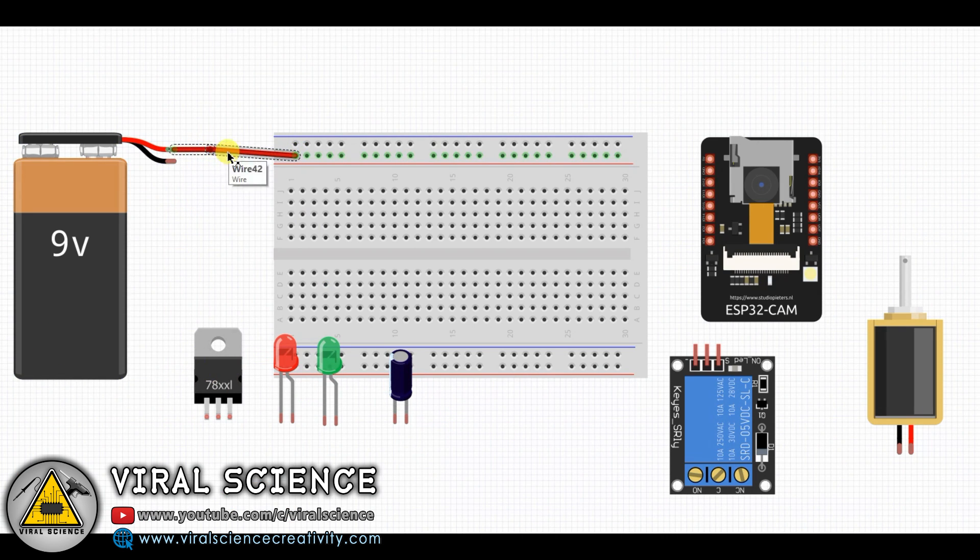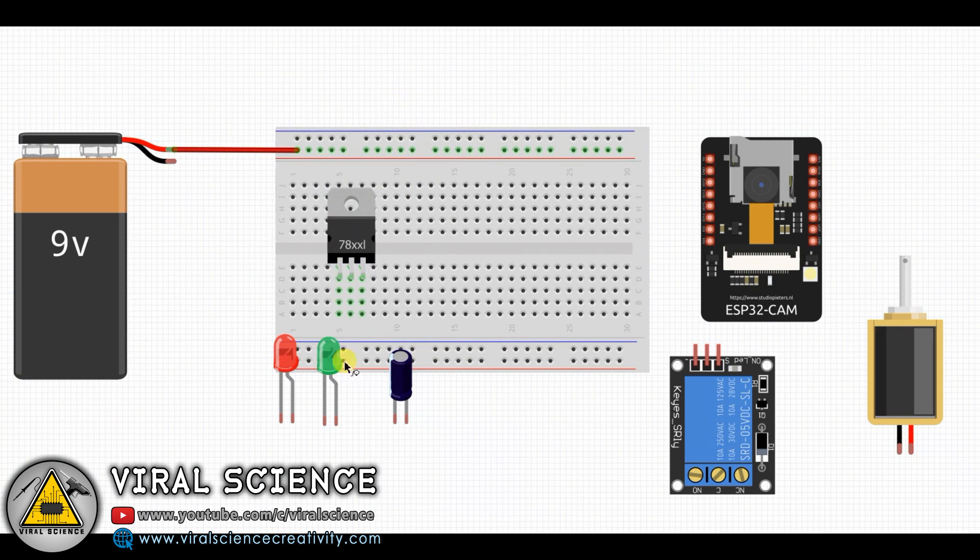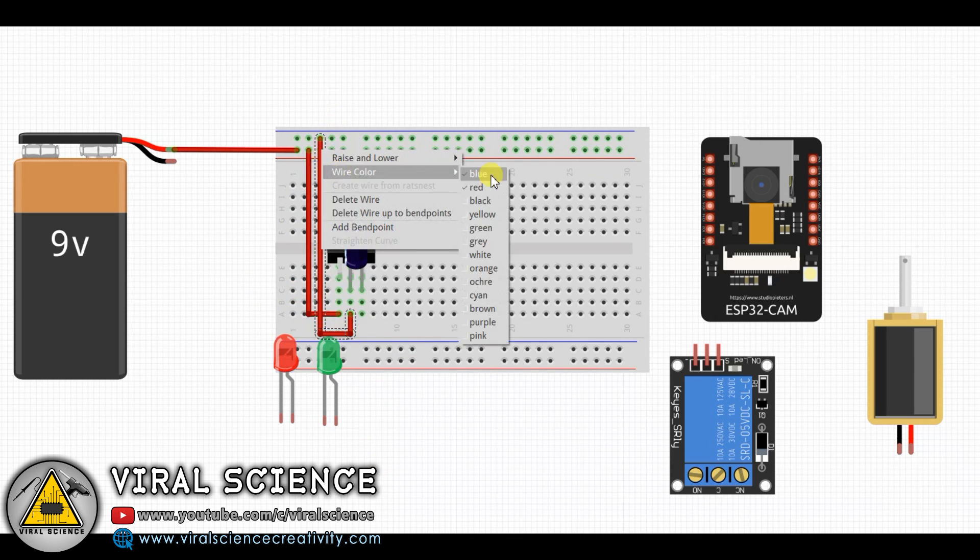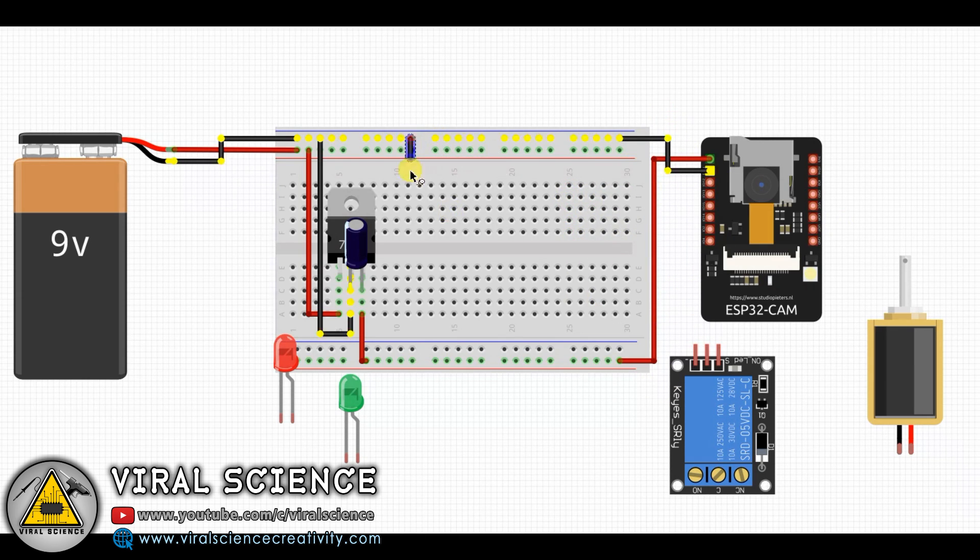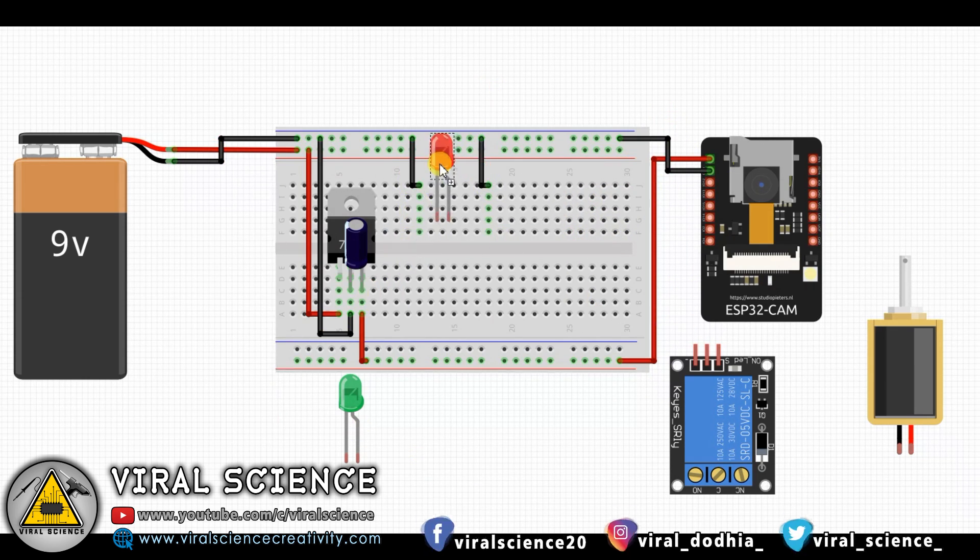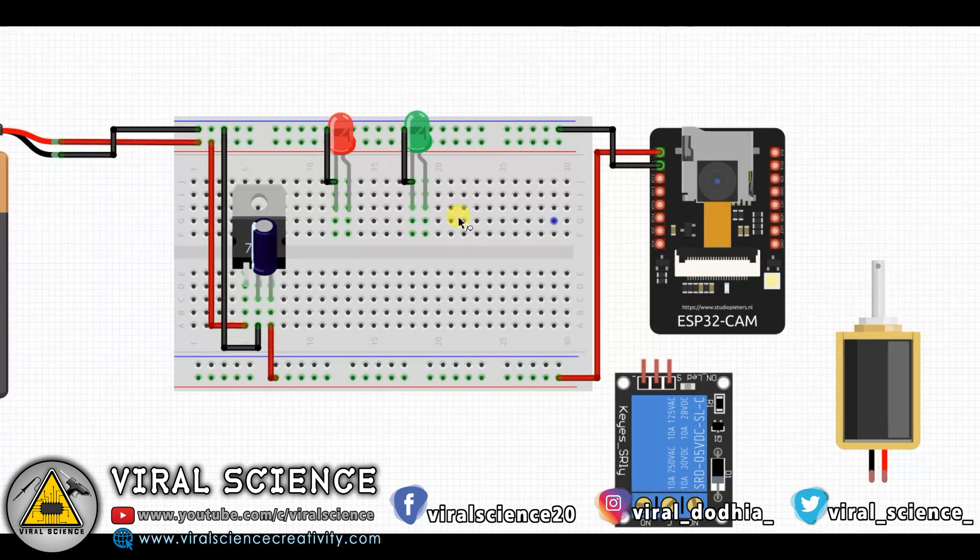Now we will connect all the components of our project. I am using this 7805 regulator to get 5V from 12V, because ESP32 cam board works on 5V and our relay module also works on 5V. The reason for using the 12V or 9V battery is that our solenoid lock works on 12V.